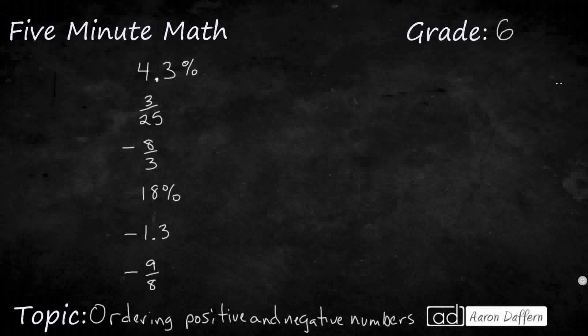So I've got a series of 6 quantities here, and let's say I want to put them in order from least to greatest. One of the things that's going to be difficult is that I've got some percents, I've got some fractions, and I've got just a decimal. So we need to make them all look the same.